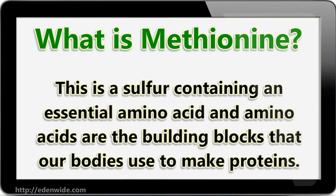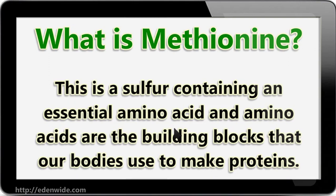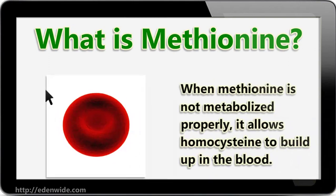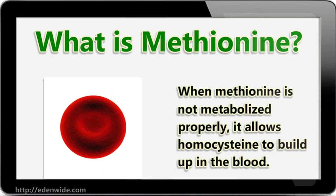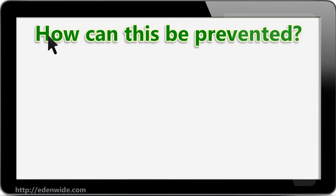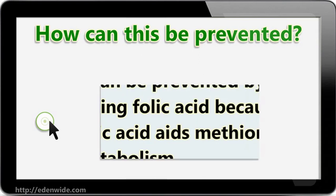Amino acids are the building blocks that our bodies use to make proteins. When methionine is not metabolized properly, it allows homocysteine to build up in the blood. How can this be prevented? It can be prevented by taking folic acid.